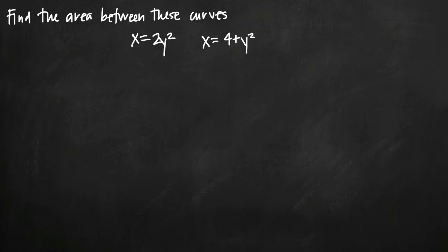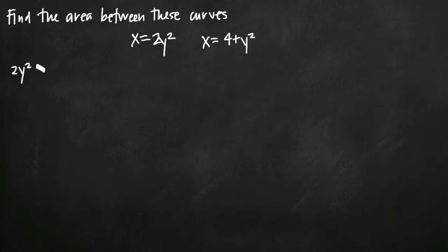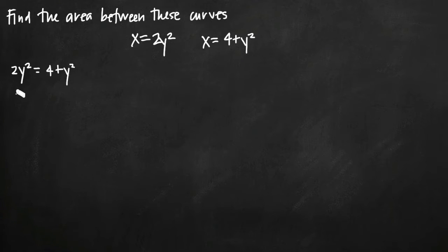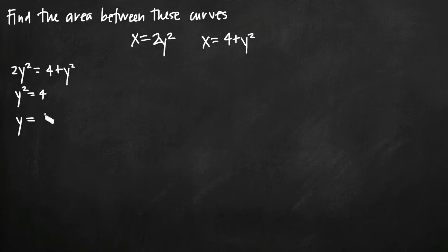The first thing we're going to do is set the curves equal to one another. Since they're both equal to x we can set them equal to each other and then solve for y. So 2y squared equals 4 plus y squared. Subtracting y squared from both sides we get y squared equals 4, and taking the square root of both sides we find that y equals positive or negative 2. So we have two intersection points: y equals negative 2 and y equals positive 2.